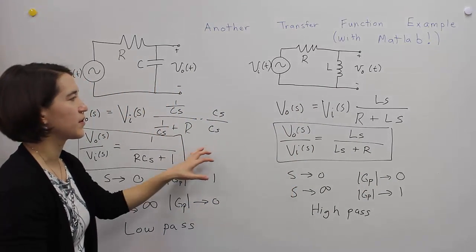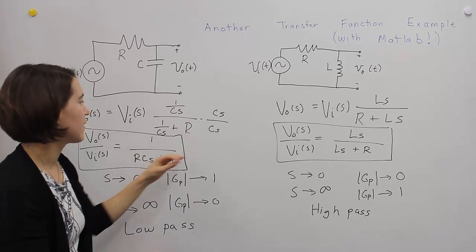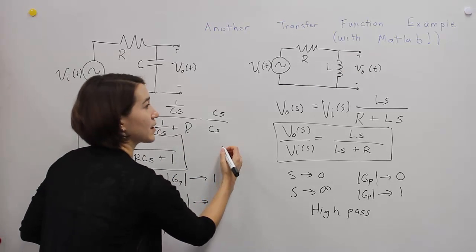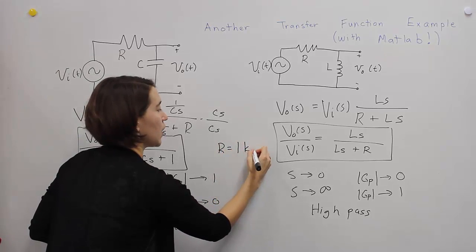So we're using all symbols here. Let's think, let's assign some real values. And then we're going to put these figures into MATLAB and actually look at a Bode plot. So let's pick some values here. We're going to go R equals 1 kilo-ohm.